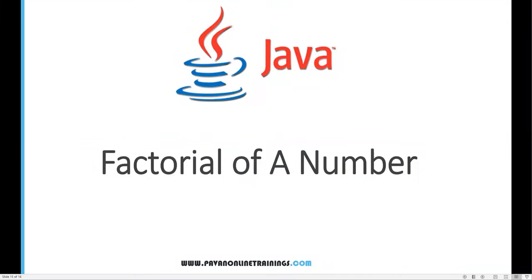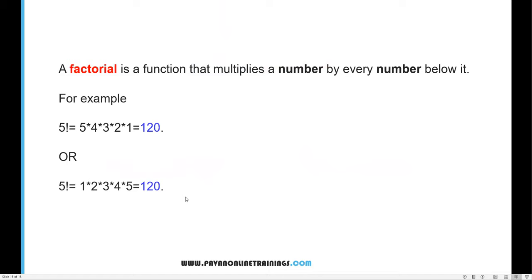Hi everyone, welcome. In this video I'm going to show you how to find the factorial of a number. A factorial is a function that multiplies a number by every number below it. For example, for 5: we multiply 5 × 4 × 3 × 2 × 1 — all the numbers below the actual number. The total value is 120, and that is the factorial.